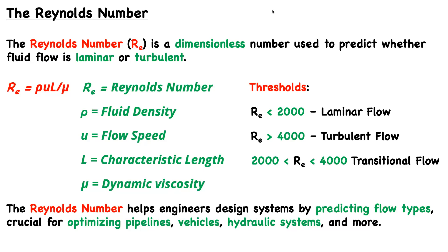Depending on the dimensionless number that results from this calculation, you can determine the type of flow by referring to a few thresholds. For laminar flow, the Reynolds number is less than approximately 2,000. For turbulent flow, it is greater than approximately 4,000. There is also a third case called transitional flow, where you have some contribution from each type, typically between 2,000 and 4,000.